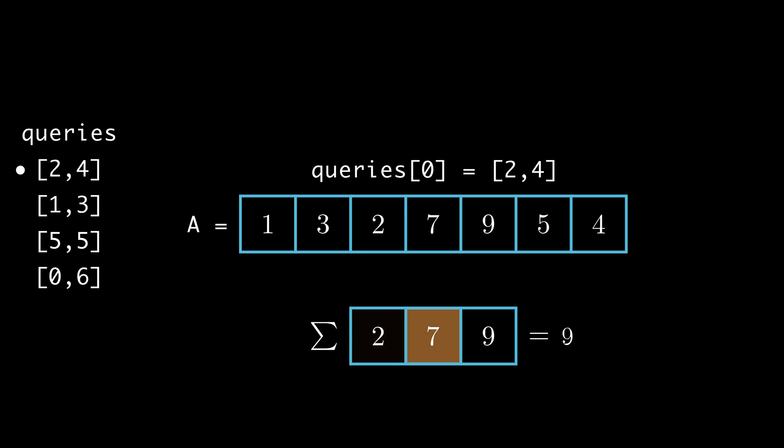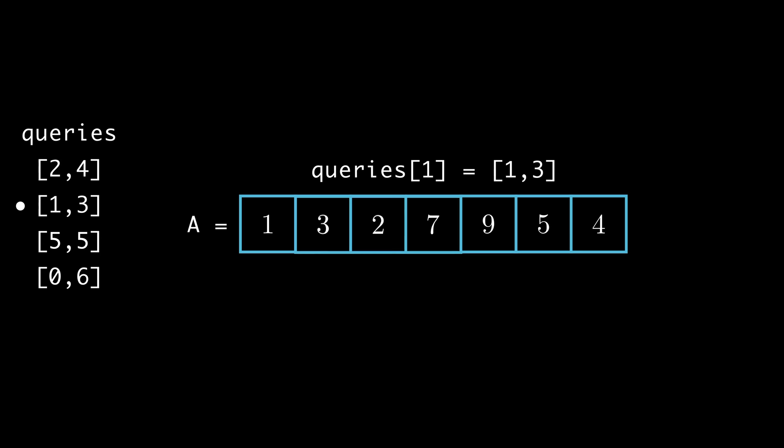Perhaps you've already guessed it by now. Since we're dealing with sums of ranges, we probably want to be applying the prefix sum technique. This will allow us to compute the sum of a contiguous range of numbers in a blistering O of 1 time, with a linear O of n precomputation.